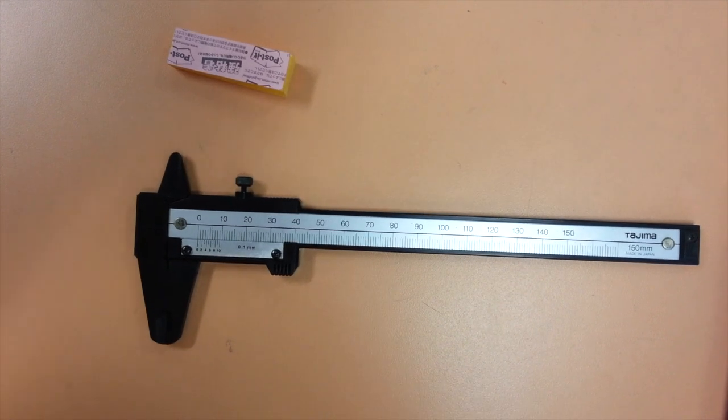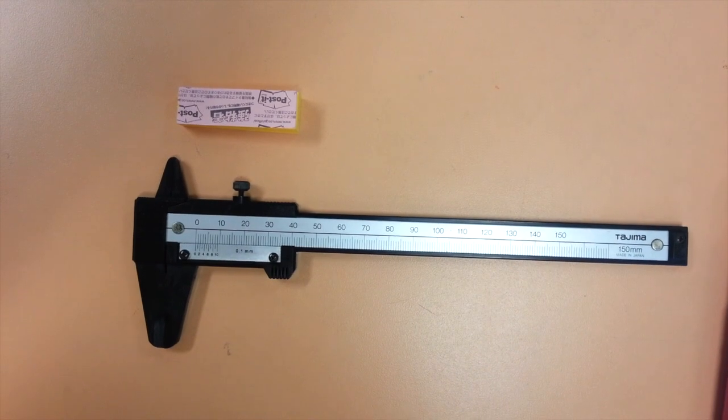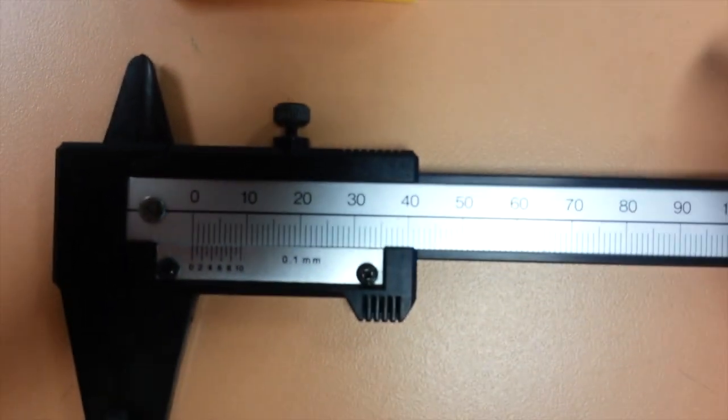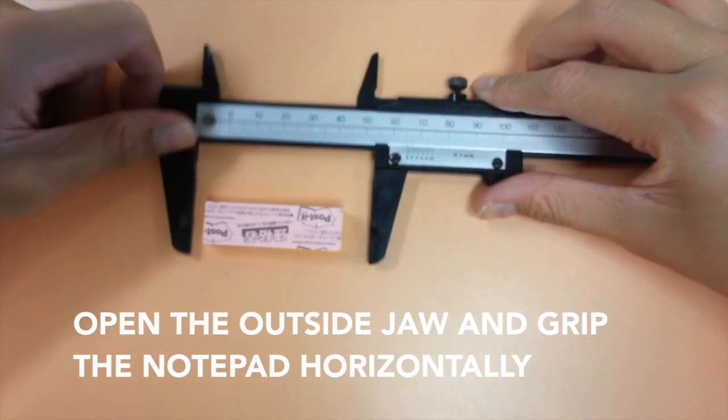Lastly, we will be using the vernier caliper which has a precision of 0.1 mm to measure the volume of the notepad. Since the vernier caliper has no zero error, we can proceed with the measurements. Firstly, open the outside jaw and grip the notepad horizontally to find its length.